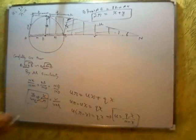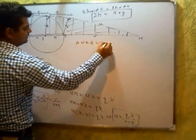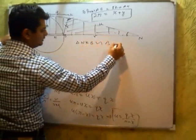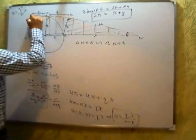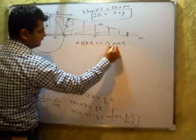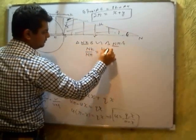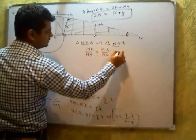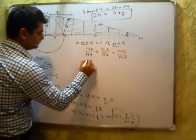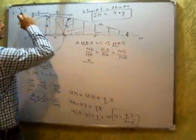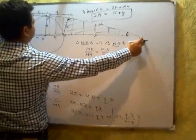Now if you take triangle NKB similar to triangle NHA — because 90, 90 and 90, 90 — you can have NK upon NH equals KB upon HA equals NB upon NA. NK is again U, and NH is U plus 2Q.